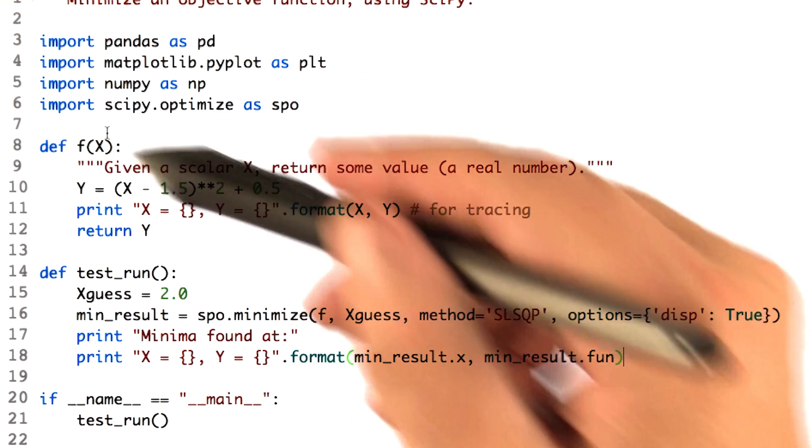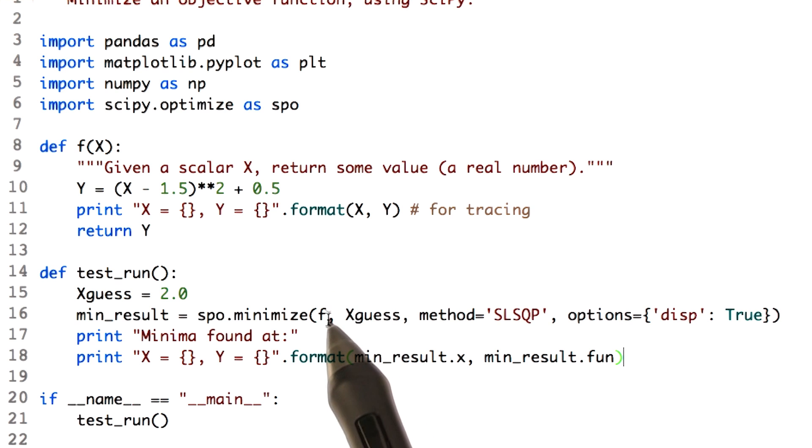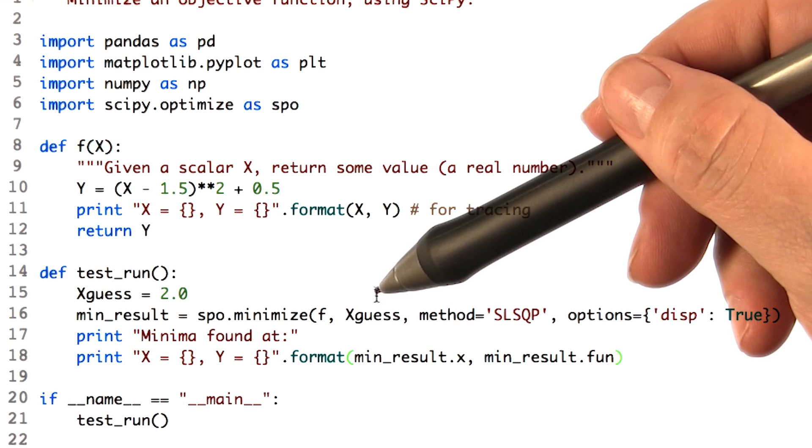F, that's our function here. So we're saying minimizer, please minimize, find the minimum for this function. Xguess is our guess.